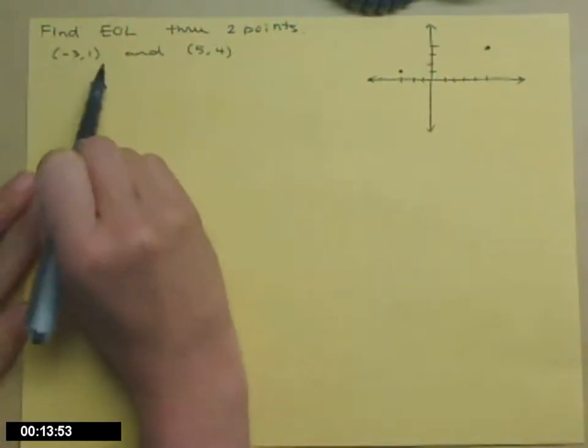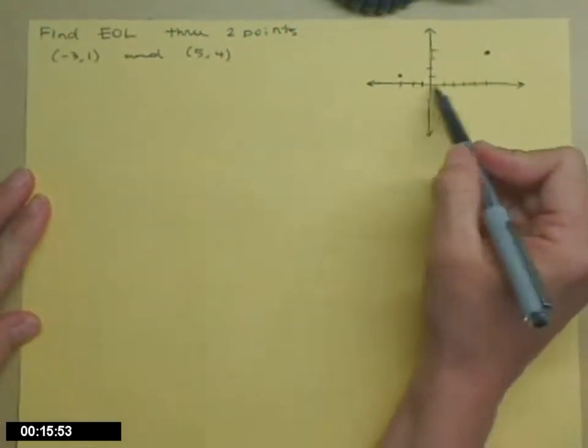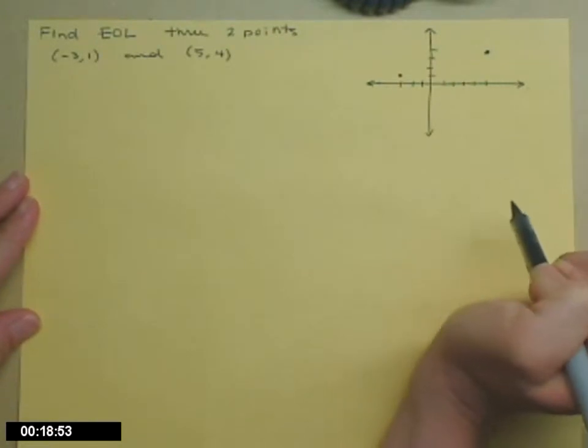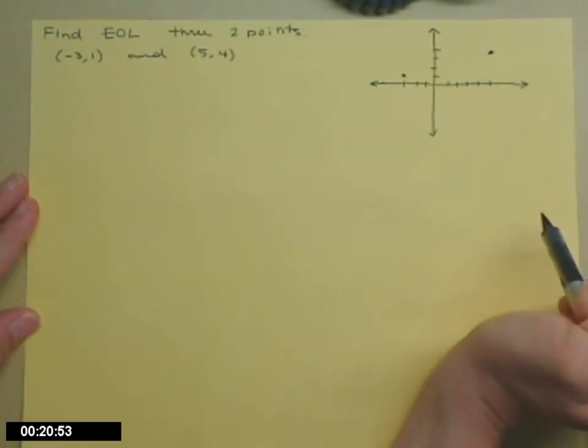The two points I've chosen are (-3, 1) and (5, 4). You'll notice over here I have those plotted, which gives me an idea if I'm on the right track when I find my m and my b.